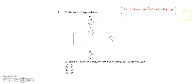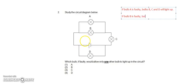What happens if bulb B is faulty? If bulb B is faulty, the current will still be able to pass through A and C as well as D without being interrupted. So again, all the other three bulbs will light up — bulbs A, C and D will light up.